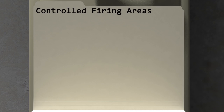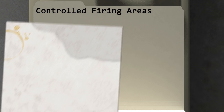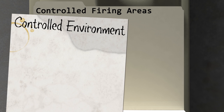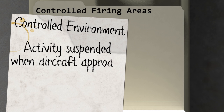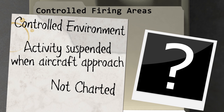Controlled firing areas, or CFAs, contain activities which, if not conducted in a controlled environment, could be hazardous to aircraft. CFAs are different from other hazardous areas due to the fact that their activities are immediately suspended when a non-participating aircraft appears to be approaching the area. Because of this, they do not get charted, as they do not require pilots to alter their course.